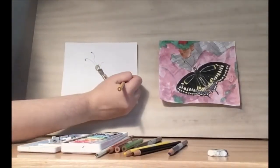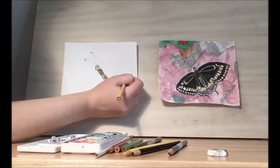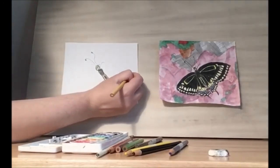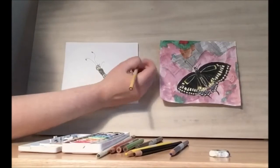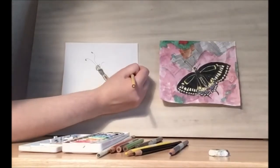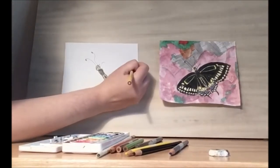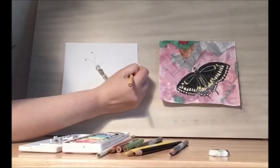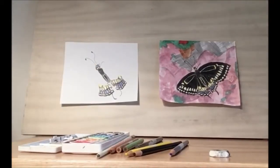So we start here and they get bigger as they go out. One, two, three, four, five, six, seven, eight, nine. I got my wingspan on that side.